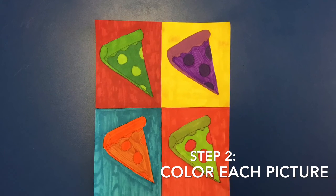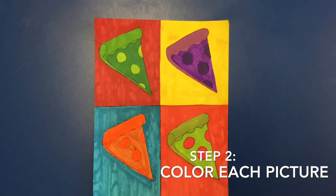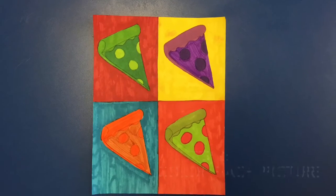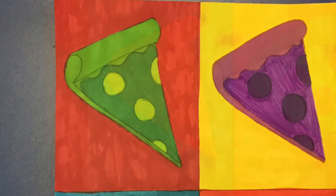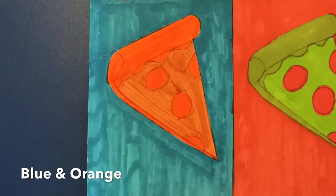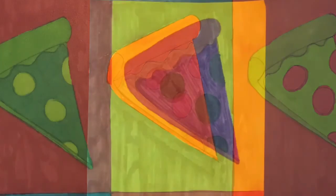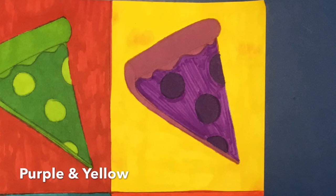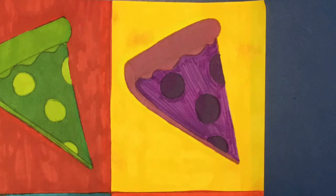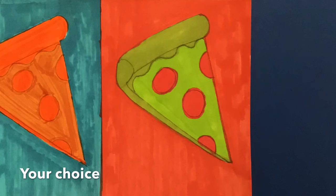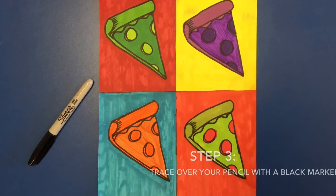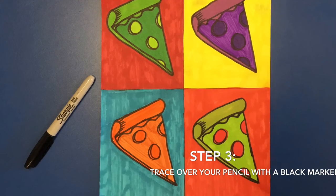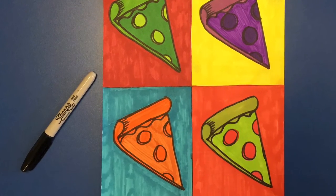So one of your pictures will be red and green, one will be blue and orange, and one will be purple and yellow. Your last one you get to pick whatever colors you would like. The third and final step is to go over your pencil lines with a black marker.